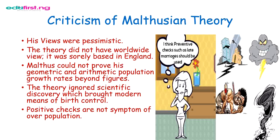Now let's look at what was said to be wrong with this theory propounded by Malthus. It was said that Malthus's views were pessimistic — he wasn't optimistic about the economies of his time. The theory did not have a worldwide view because it was solely based in England. Malthus could not prove his geometric and arithmetic population growth rates beyond figures — they could see the figures but couldn't relate them to reality. The theory also ignored scientific discoveries which brought about modern means of birth control. It was also said that positive checks are not symptoms of overpopulation.